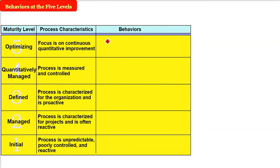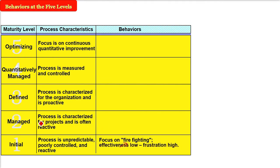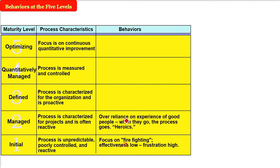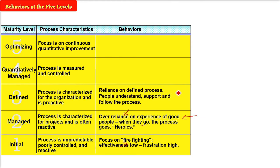Alongside process characteristics, each level also has behavioral characteristics. At level one (Initial), the behavior is like firefighting — the damage has already been done and the response is reactive, with very low effectiveness and high frustration. At level two (Managed), there is over-reliance on the experience of good people; when those people leave, the process goes with them, which is why it remains only at the project level.